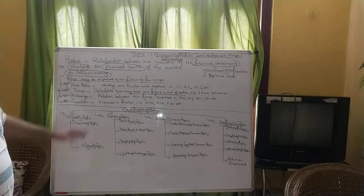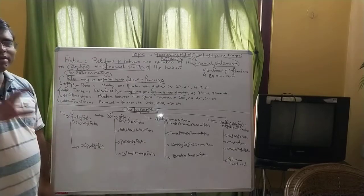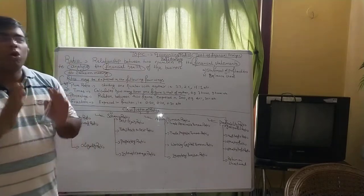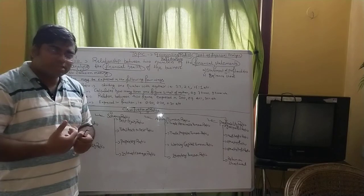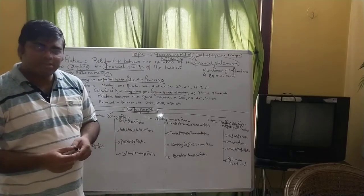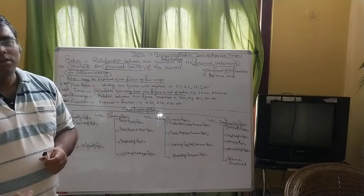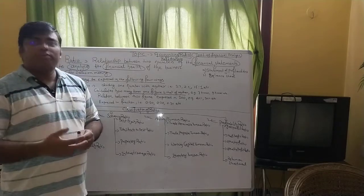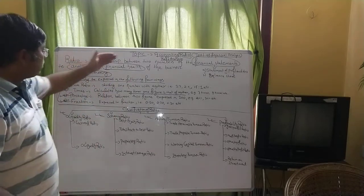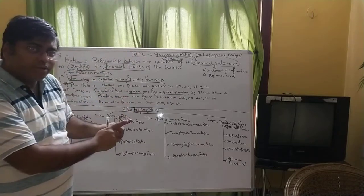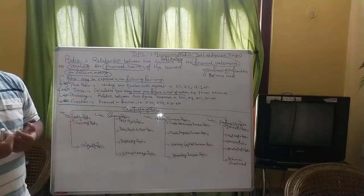To summarize: a ratio is a relationship between two numbers of the financial statements to understand the financial progress of the business. The decision makers — the board of directors, the owner, and the managers — look at the financial statements, understand the ratios, analyze the performance of the business, and take meaningful decisions. That is why we use ratios under accounting ratio.